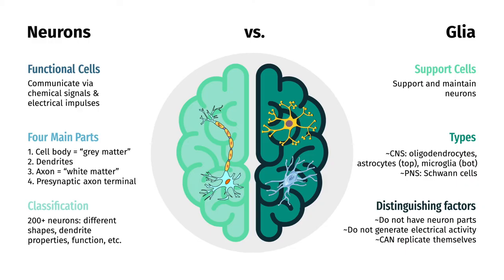There are two classes of cells in the nervous system. Neurons, which are the functional cells that receive, process, and store information via chemical signals and electrical impulses, and glial cells, which provide critical support and maintenance for neurons.